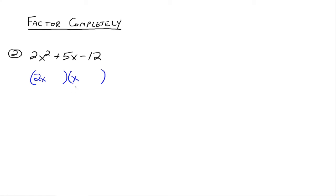If we do 1 and 12, we'd see right away that regardless of the signs, you'd have 2x times 12 which is 24x and 1x — you're not going to get that to add or subtract up to 5. So 1 and 12 is not a good combination. Same idea switching it: 2x times 1 is 2x and 12x — those won't get to 5x either.